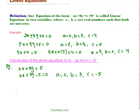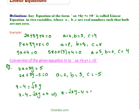Let's take another example: convert x minus 4 is equal to root 3 times y into the form ax plus by plus c equal to 0. The given equation x minus 4 equal to root 3y can be written as x minus 4 minus root 3y is equal to 0, which is also written as x minus root 3y minus 4 equal to 0. This is clearly in the form ax plus by plus c equal to 0, where a is equal to 1, b is equal to minus root 3, and c is equal to minus 4.